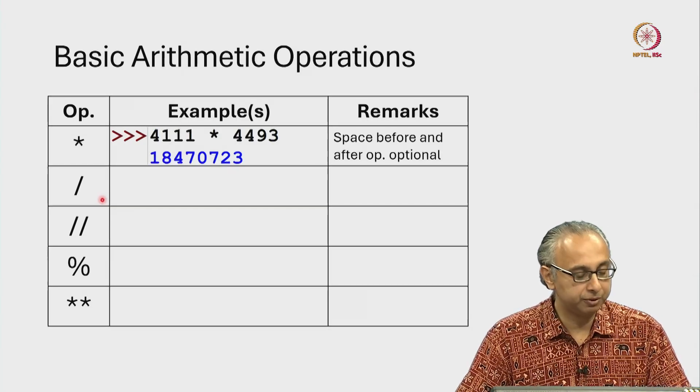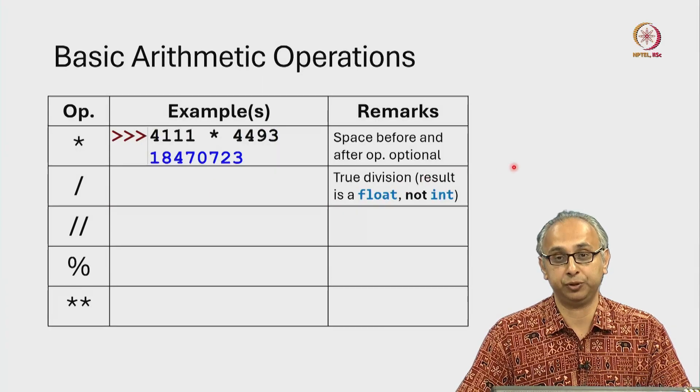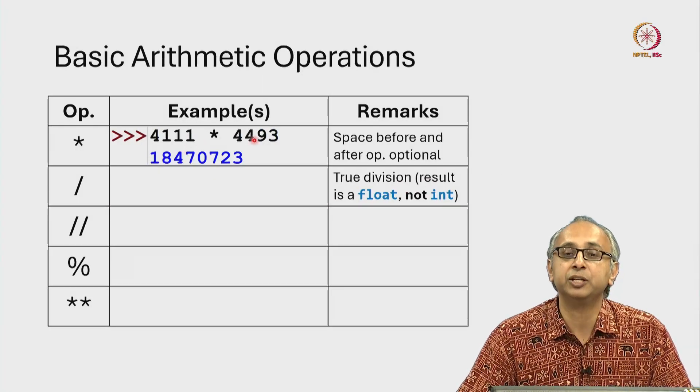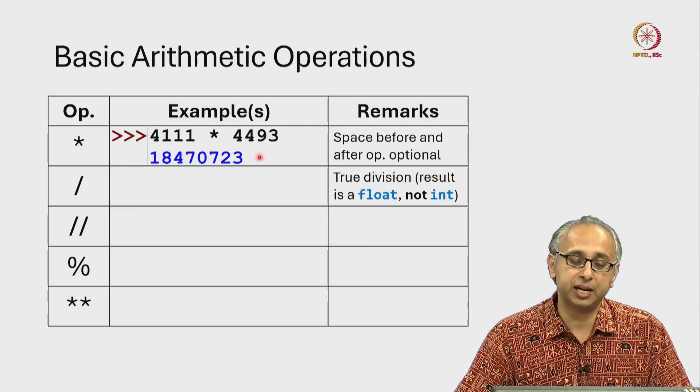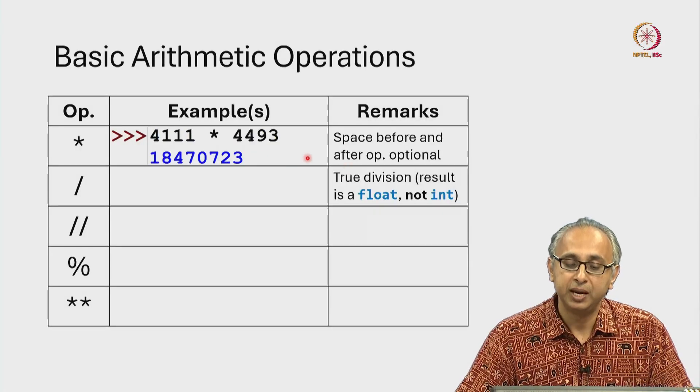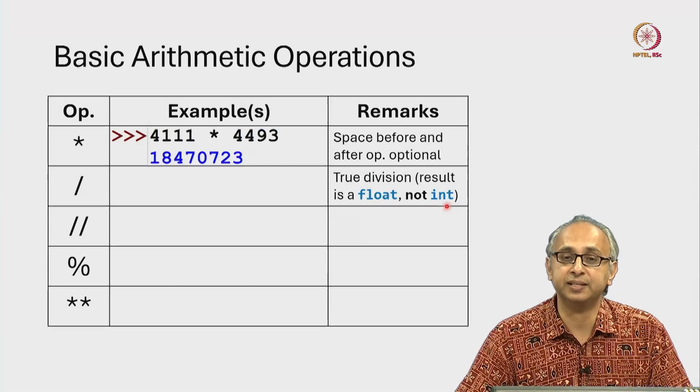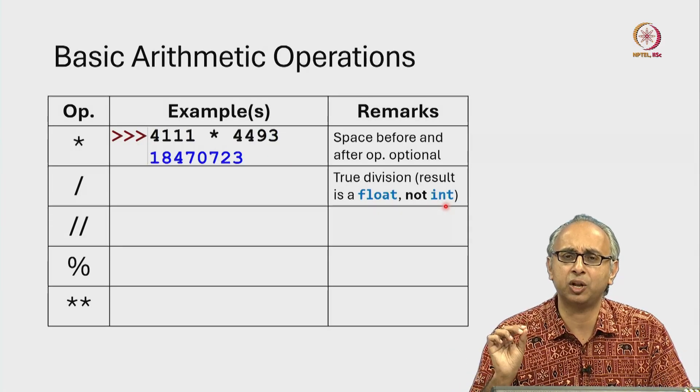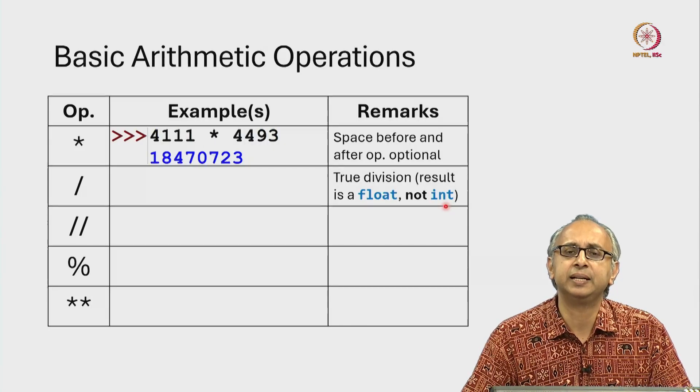Now coming to this operator, remember this is true division. Now if you multiply two integers, the result is always an integer. In Python we call this an int and we will understand this terminology in more detail later.